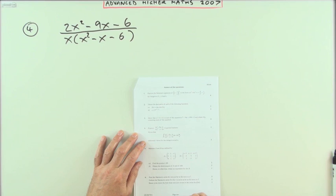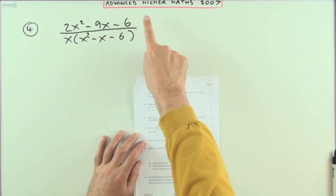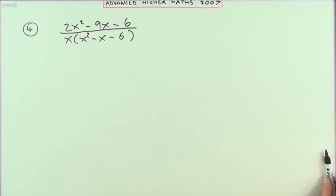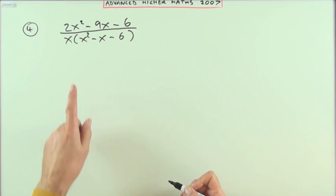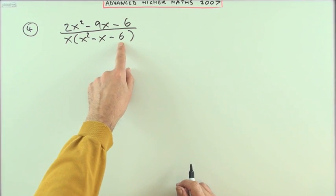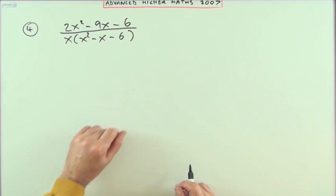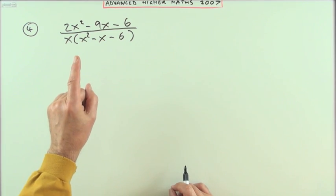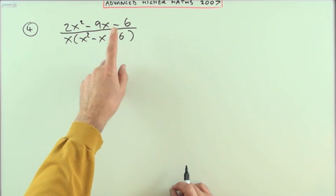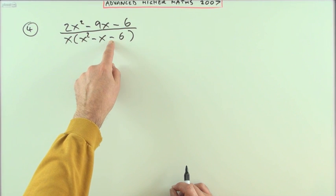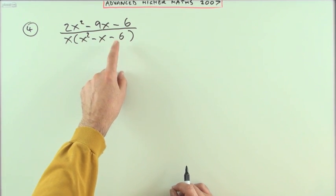Number four from the 2007 Advanced Higher, partial fractions, nice one with remarks. Express this rational expression in partial fractions. Well, the first thing is I need to factorize this, unless of course it's irreducible, but I know it's not irreducible because the discriminant of that is 1² plus 4×6 which is 25. The discriminant's a perfect square, so it's going to factorize.